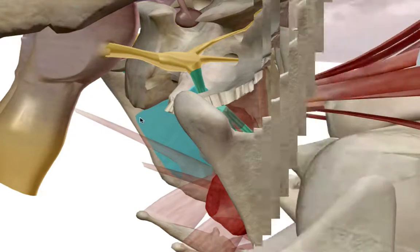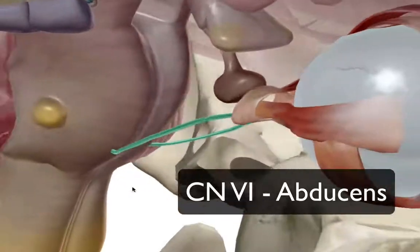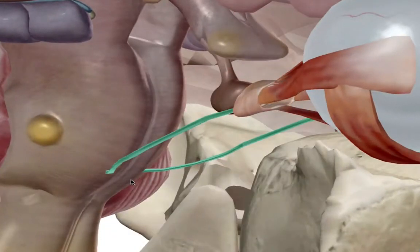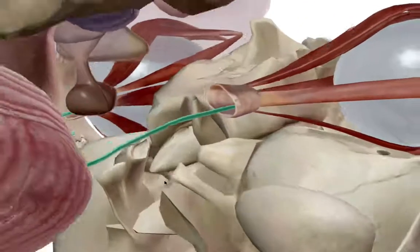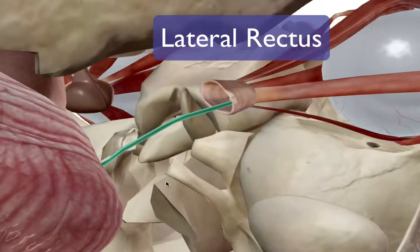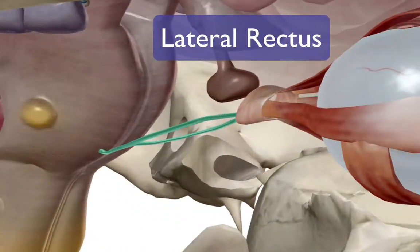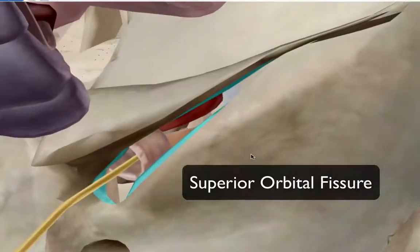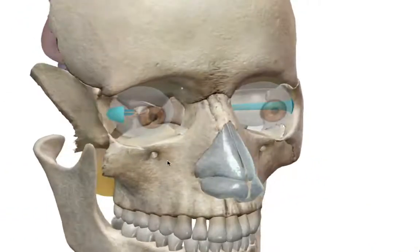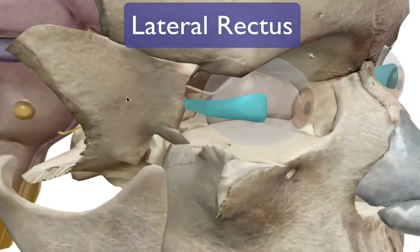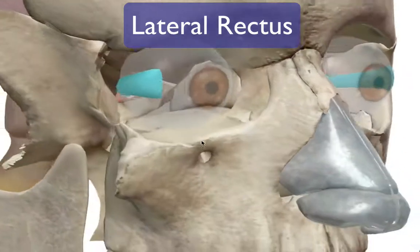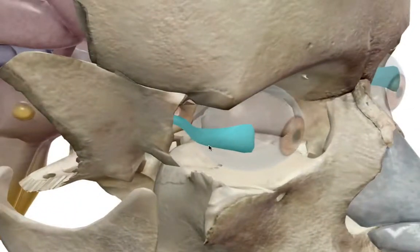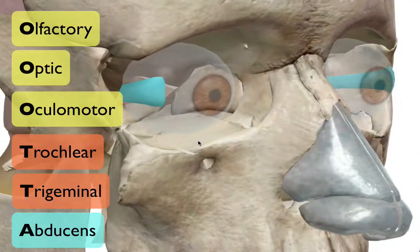Finally, cranial nerve number six is the abducens nerve — the 'A' in our mnemonic. Its origin is at the medial aspect of the pons, and it exits the skull through the superior orbital fissure. It innervates just one muscle — the lateral rectus — which is responsible for lateral movement of the eyeball. That covers all six cranial nerves for this video.